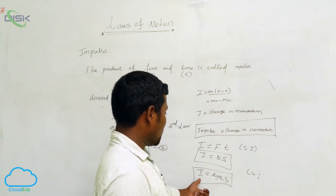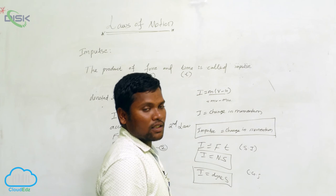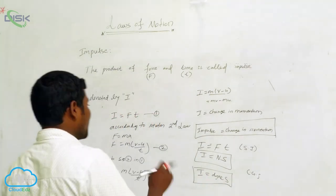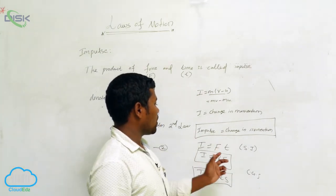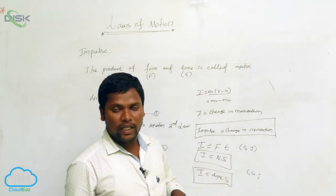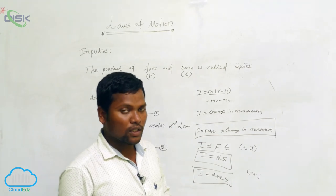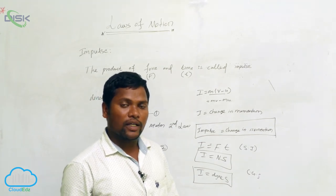In CGS units, the unit of impulse is dyne-second. After impulse, the next concept is momentum, and after that we will cover the law of conservation of momentum.